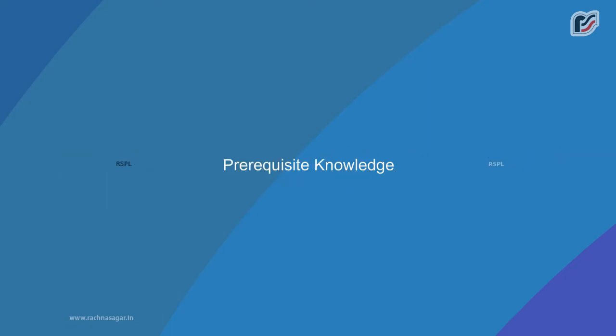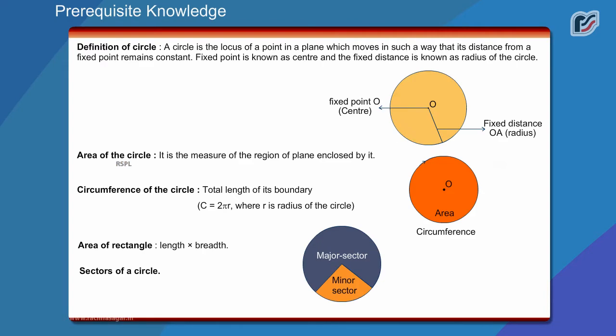Pre-requisite knowledge. Definition of circle: A circle is the locus of a point in a plane which moves in such a way that its distance from a fixed point remains constant. Fixed point is known as centre and the fixed distance is known as radius of the circle.